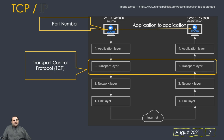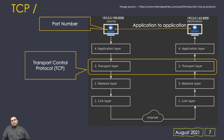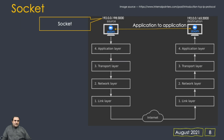The port number makes it possible to deliver information to a particular application when there are multiple applications running, so each application receives its desired data. TCP utilizes port numbers to send information from one application to another. We usually refer to TCP because it is the one that guarantees data delivery, whereas UDP does not guarantee data delivery because TCP implements acknowledgement. If we see the combination of an IP address and port number, we call it a socket.